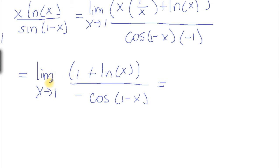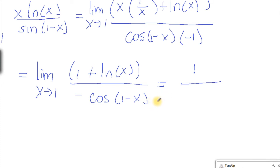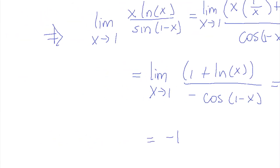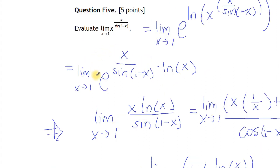Now let's plug in one. One plus log of one is zero, so we have one on top. Cosine of one minus one is cosine of zero, which is one, so we have minus one on the bottom. Now one over minus one is just equal to minus one. But this is the limit of the exponent part.